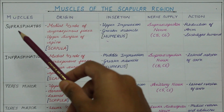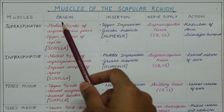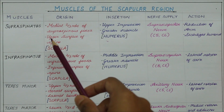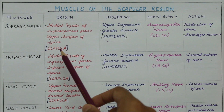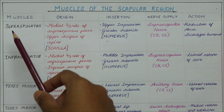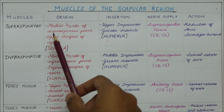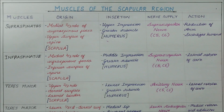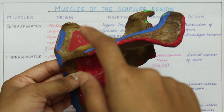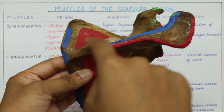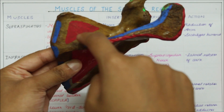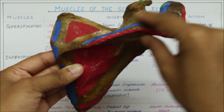Firstly, we have the supraspinatus. It originates from the medial two-thirds of the supraspinous fossa and the upper surface of the spine of the scapula. To remember this, we can note the word 'supra' that is common in both the supraspinatus and the supraspinous fossa. Looking at the specimen of the scapula, the supraspinatus originates from the medial two-thirds of the supraspinous fossa right here and the upper surface of the spine of the scapula.